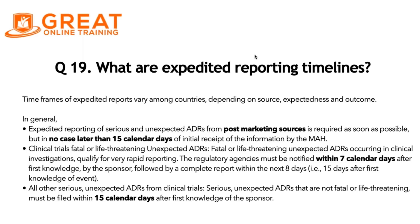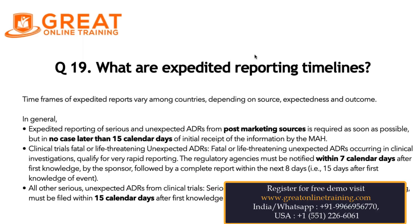The first category is the expedited reporting of serious and unexpected adverse drug reactions from post-marketing cases. For post-marketing sources, they need to be submitted as soon as possible, but in no case later than 15 calendar days of initial receipt of the information by the MAH.